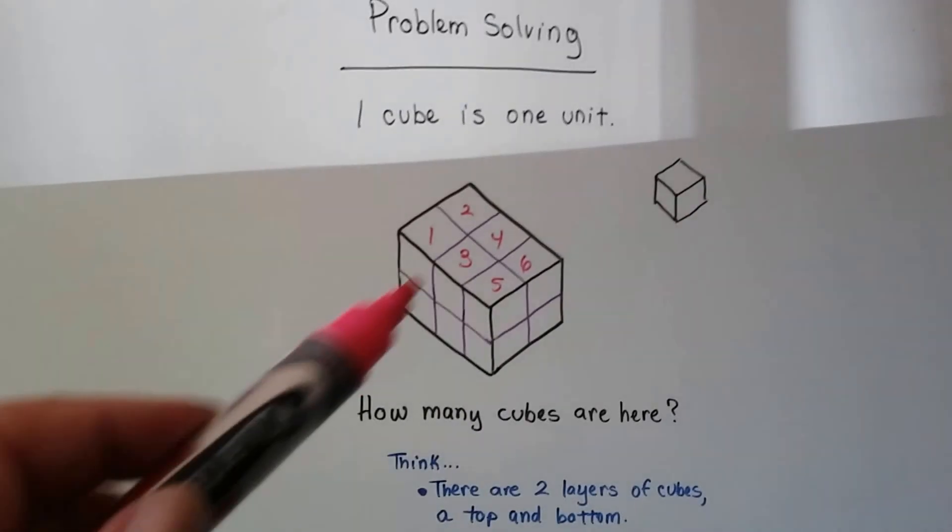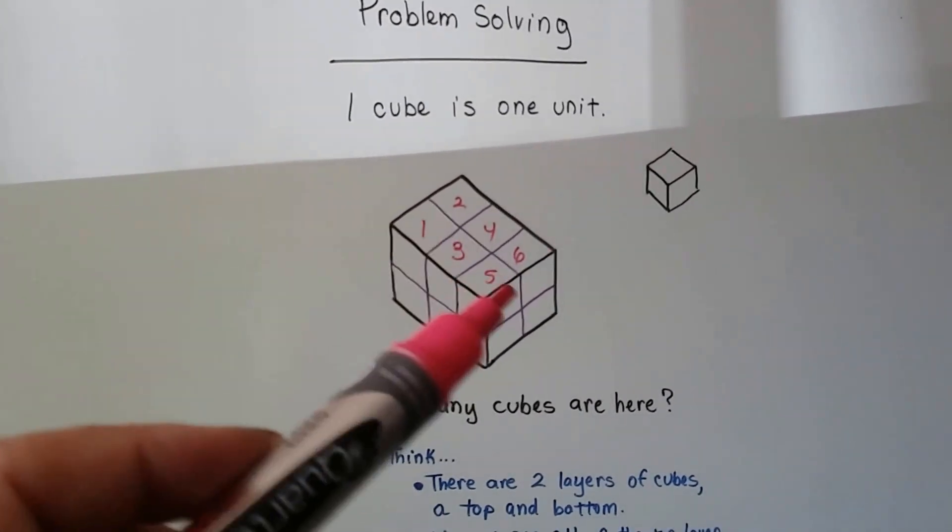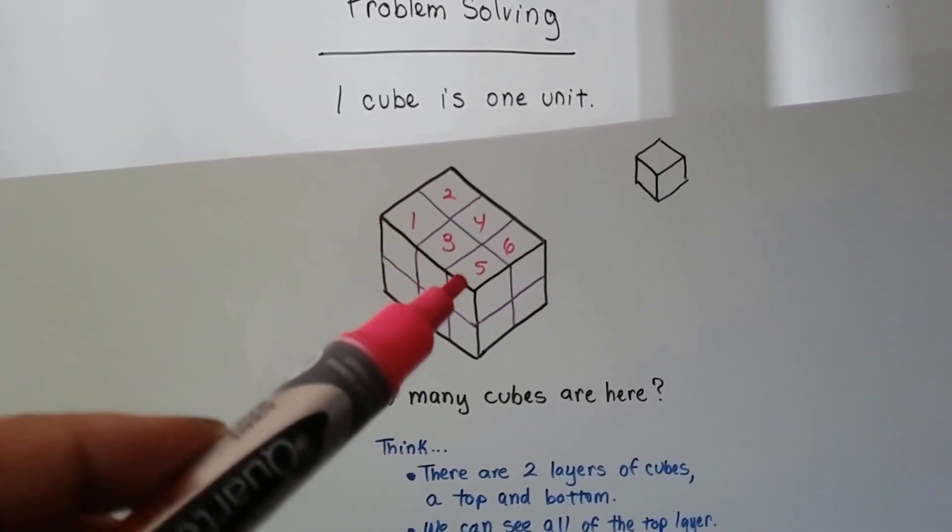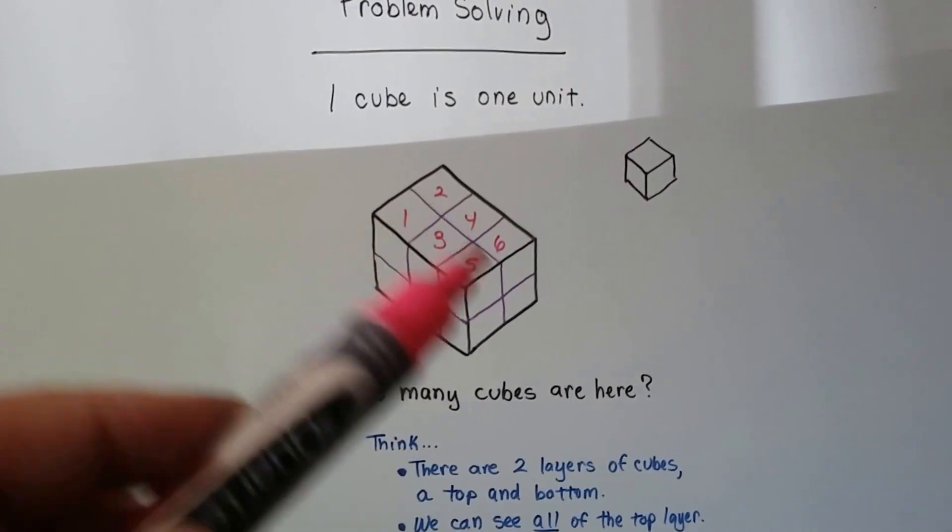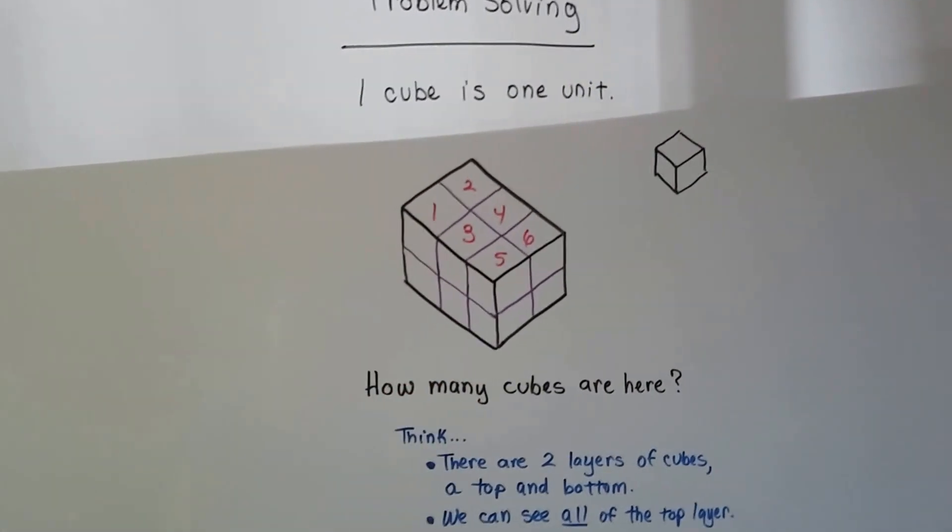So if we've got a stack like this, then there must be as many on the bottom as there are on the top because something's holding the top layer up. Okay? So we know when we see a block of cubes like this and we see that the top is all smooth and that there's six on the top, there must be six on the bottom.